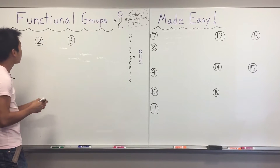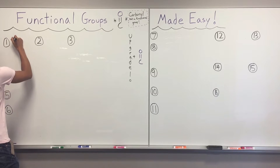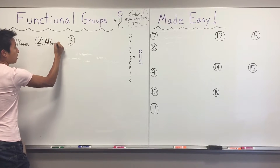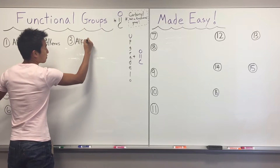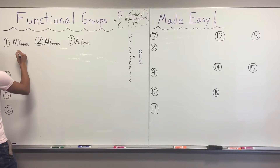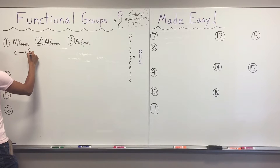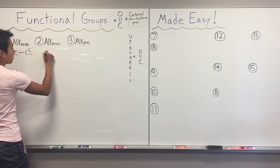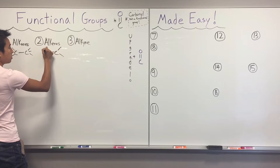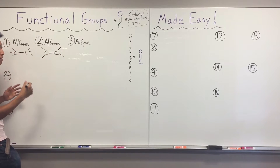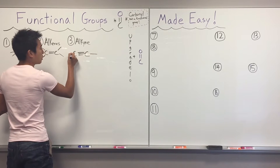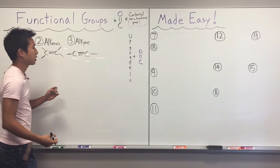Our first three functional groups are alkanes, alkenes, and alkynes. Alkanes are just a carbon single-bonded to another carbon, with each carbon having four different groups coming off of them. Alkenes are pretty similar, but the carbons are double-bonded to each other — the carbons still have four bonds total. And alkynes have triple bonds between the carbons, with only one group coming off each end, though the carbons still maintain four bonds at all times.